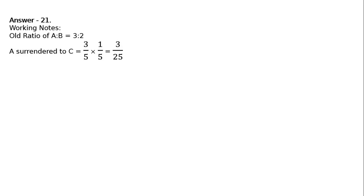And B surrendered to C. His old share is 2 upon 5. Surrendered two-fifth of his share in favor of C, multiplied by 2 upon 5, that is 4 upon 25.